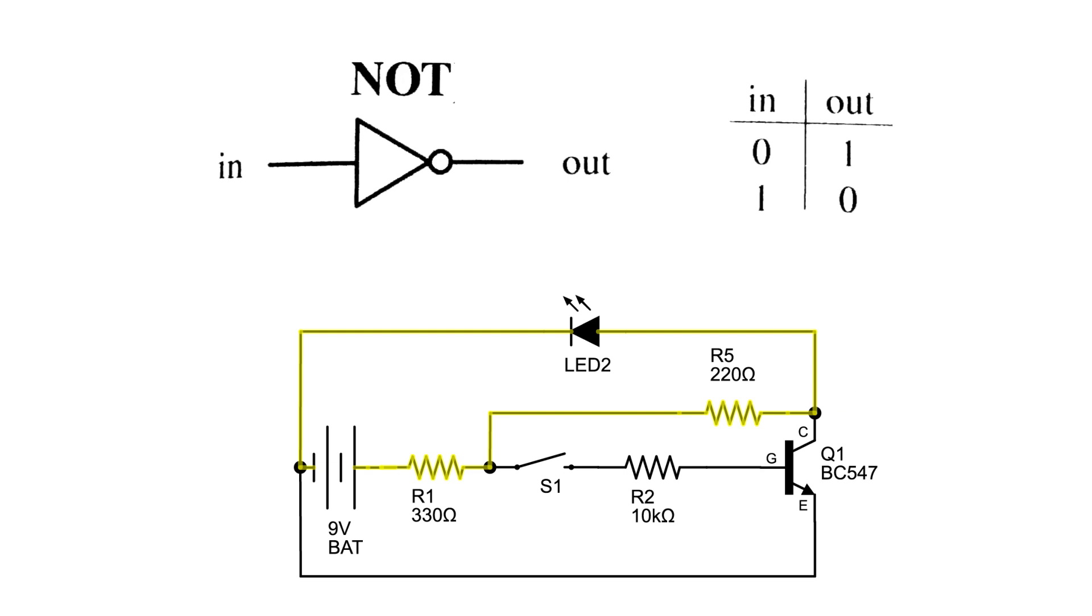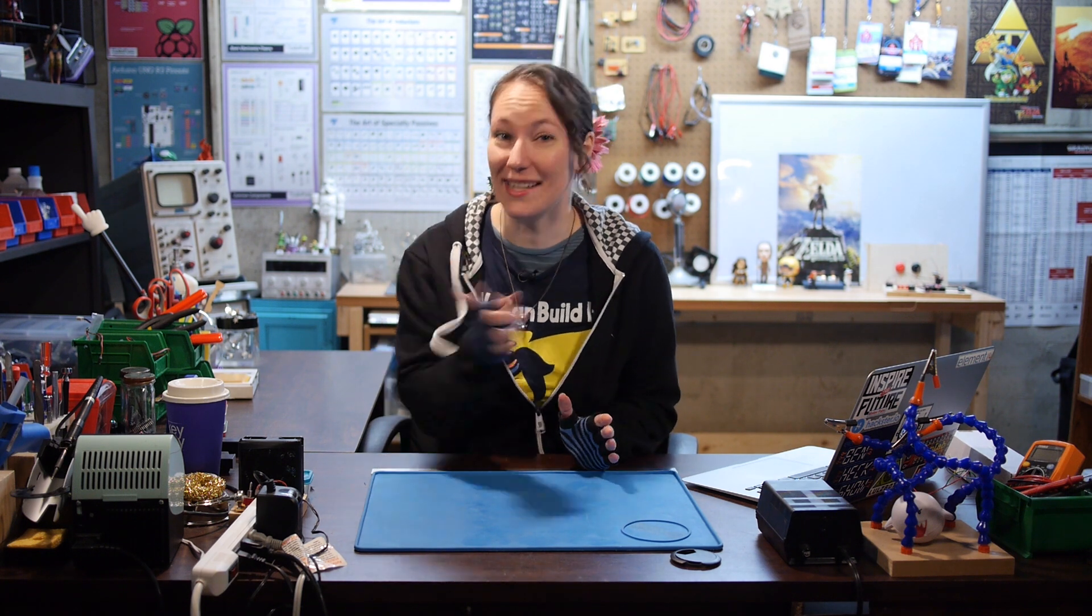This inverts the signal. If the switch is open, power routes through the LED and it is on. A low input to a high output. If the switch is closed, power routes through the transistor and the LED is off. A high input to a low output. Now that we understand how our gate circuits work, let's make our project.